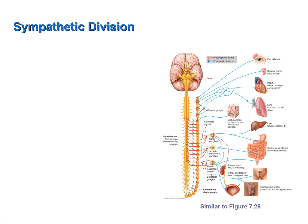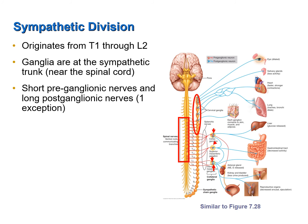Now let's discuss the anatomy of the sympathetic division. Preganglionic neurons are located in the thoracic and lumbar region of the spinal cord. Preganglionic fibers are short, synapsing with ganglia only a short distance from the spinal cord, while the postganglionic fibers are quite long — in direct contrast to the parasympathetic division. The exception is the fiber extending to the adrenal medulla, where there is only a one motor neuron pathway; stimulation causes the adrenal medulla to release noradrenaline and adrenaline, augmenting sympathetic activity.